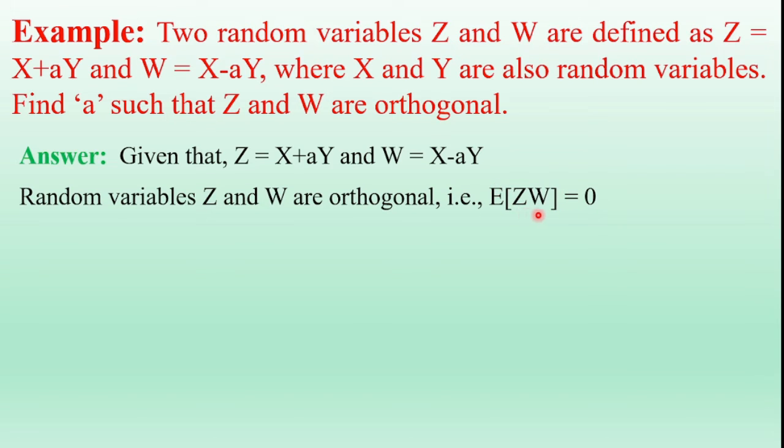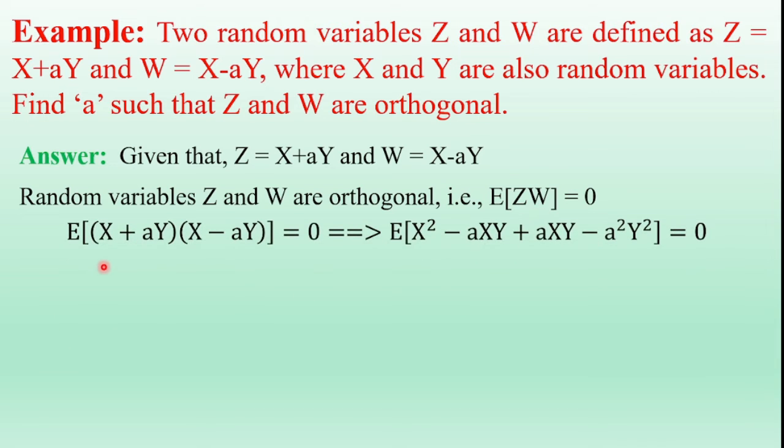So here, substitute Z value and W value. We get expectation of X plus aY into X minus aY equals zero.